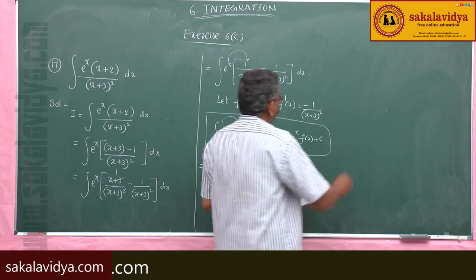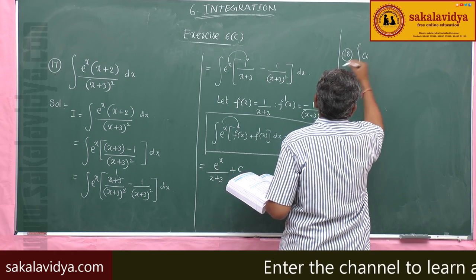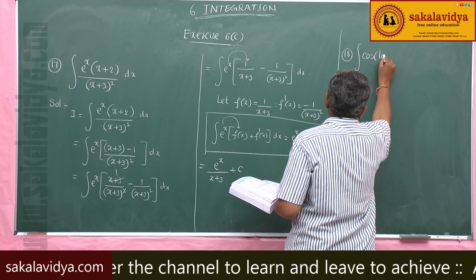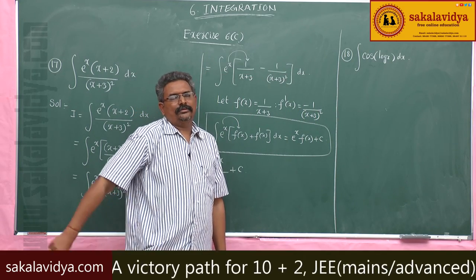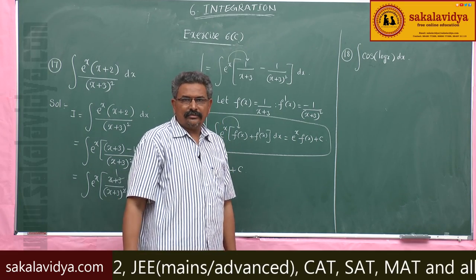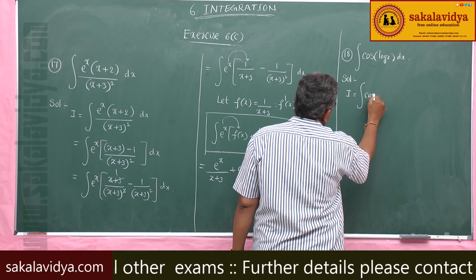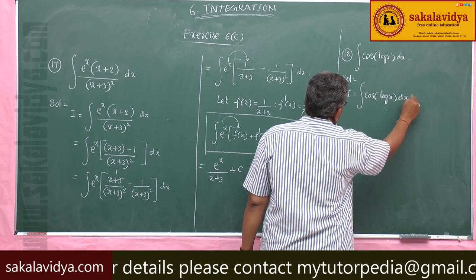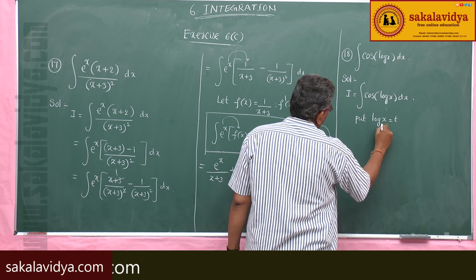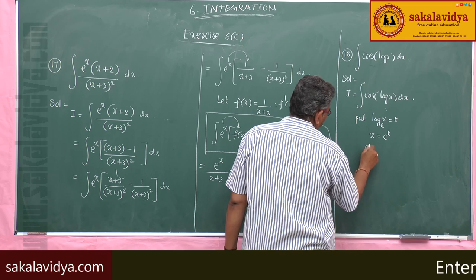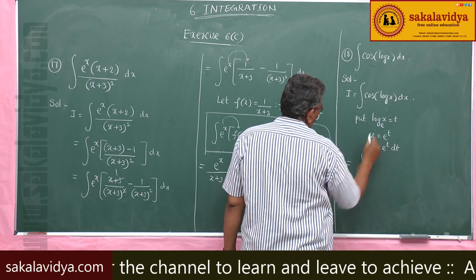The 18th problem: evaluate the integral of cos(log x) dx. It is better to substitute log x = t, where log is base e, so x = e^t and dx = e^t dt. The integral becomes the integral of e^t cos(t) dt.